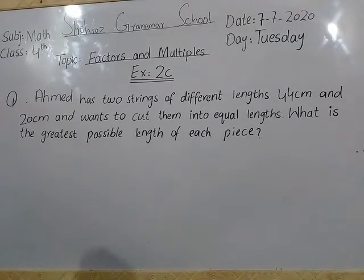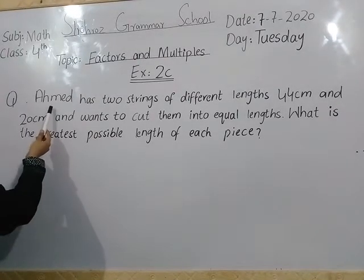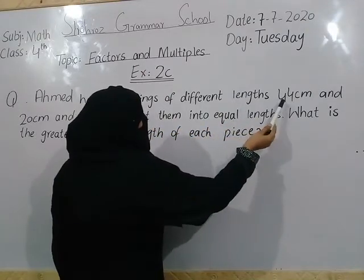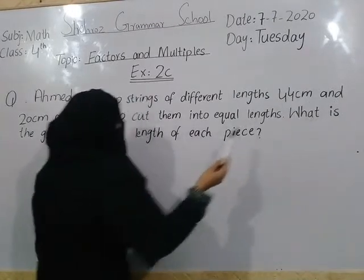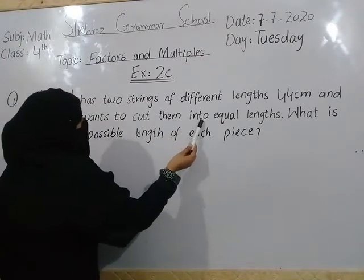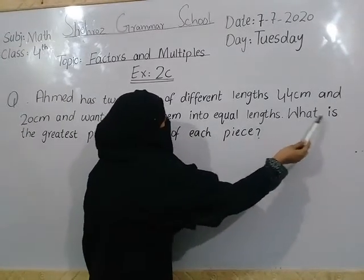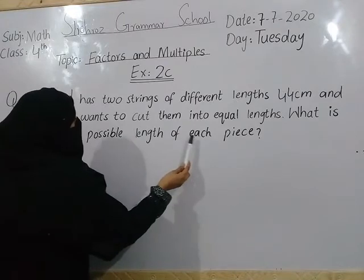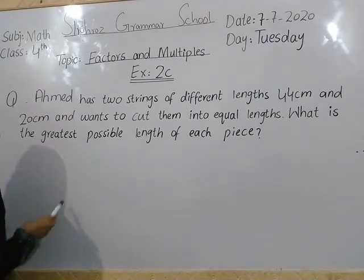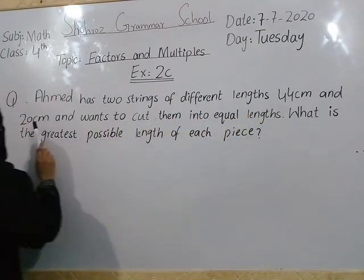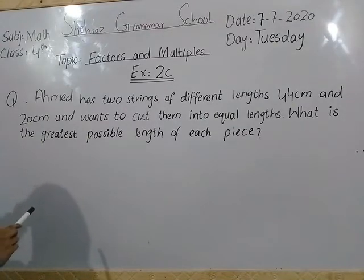Students, question number 6 — ready. The question is: an animal has 2 strings of different lengths, 44 cm and 20 cm, and wants to cut them into equal lengths. What is the greatest possible length of each piece? Students, we need to find the greatest possible length.